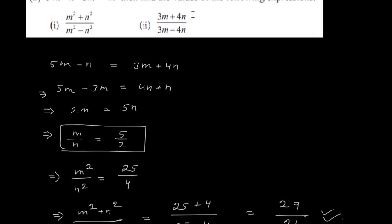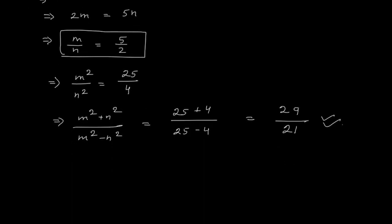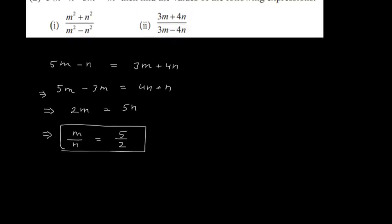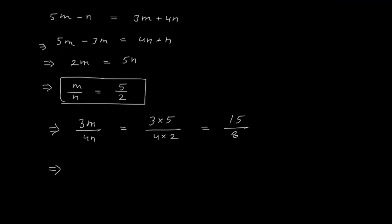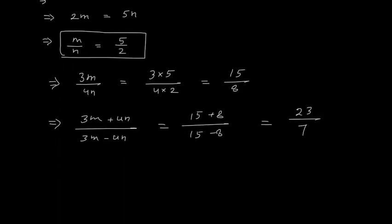Now find (3m + 4n) / (3m − 4n). Since m/n = 5/2, multiplying by 3/4: 3m / 4n = (3×5) / (4×2) = 15/8. Applying componendo-dividendo: (3m + 4n) / (3m − 4n) = (15 + 8) / (15 − 8) = 23/7.